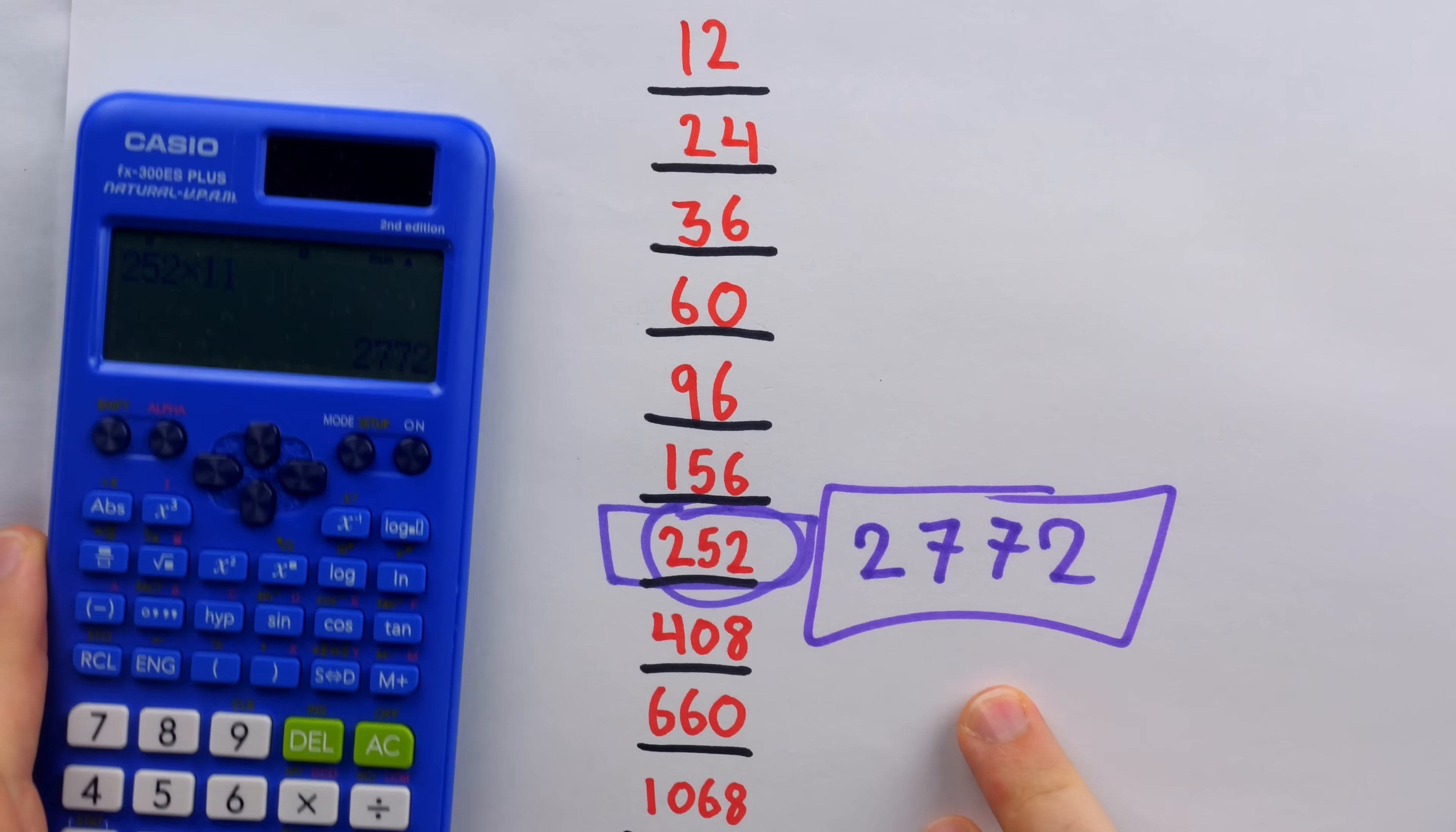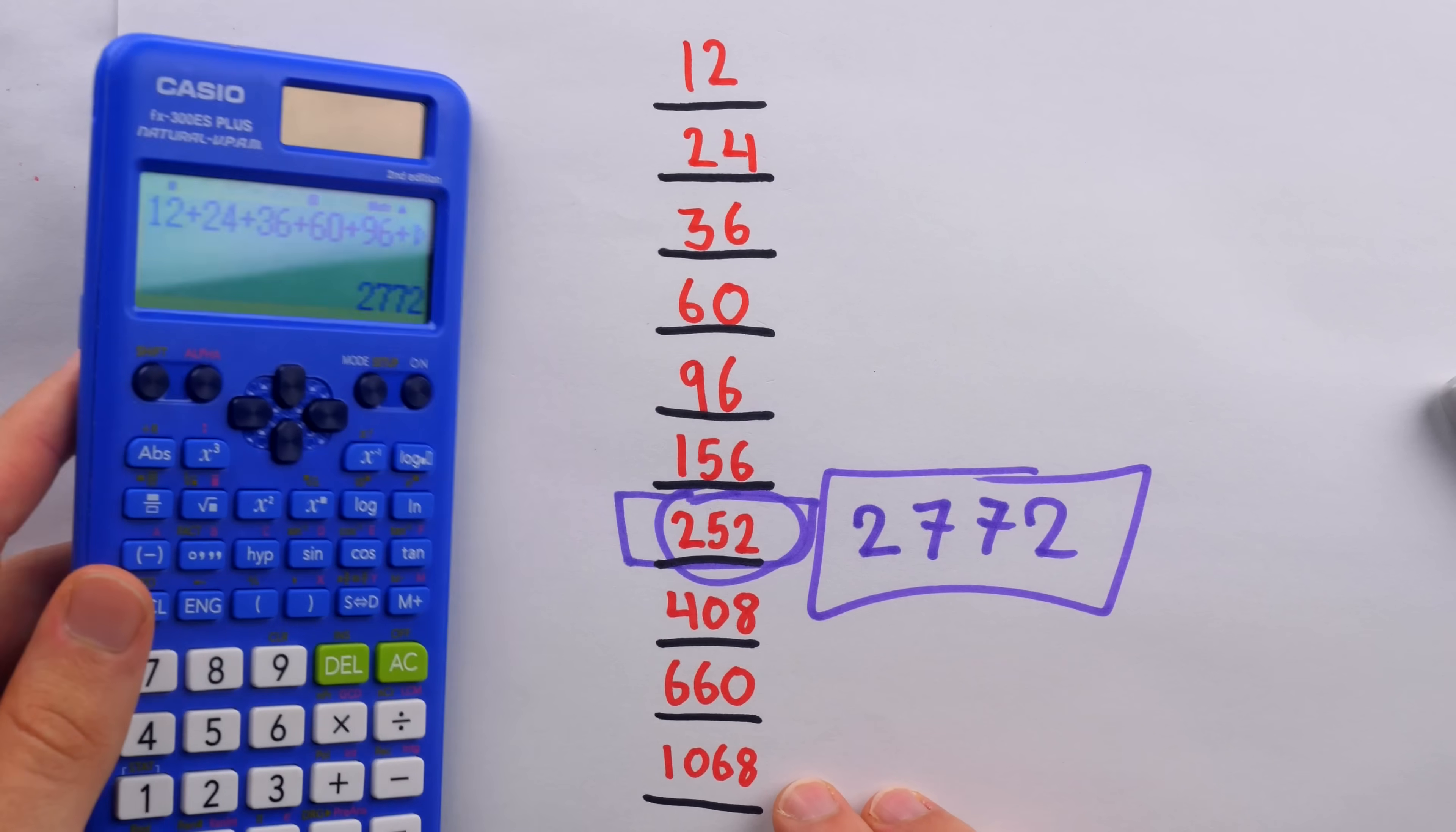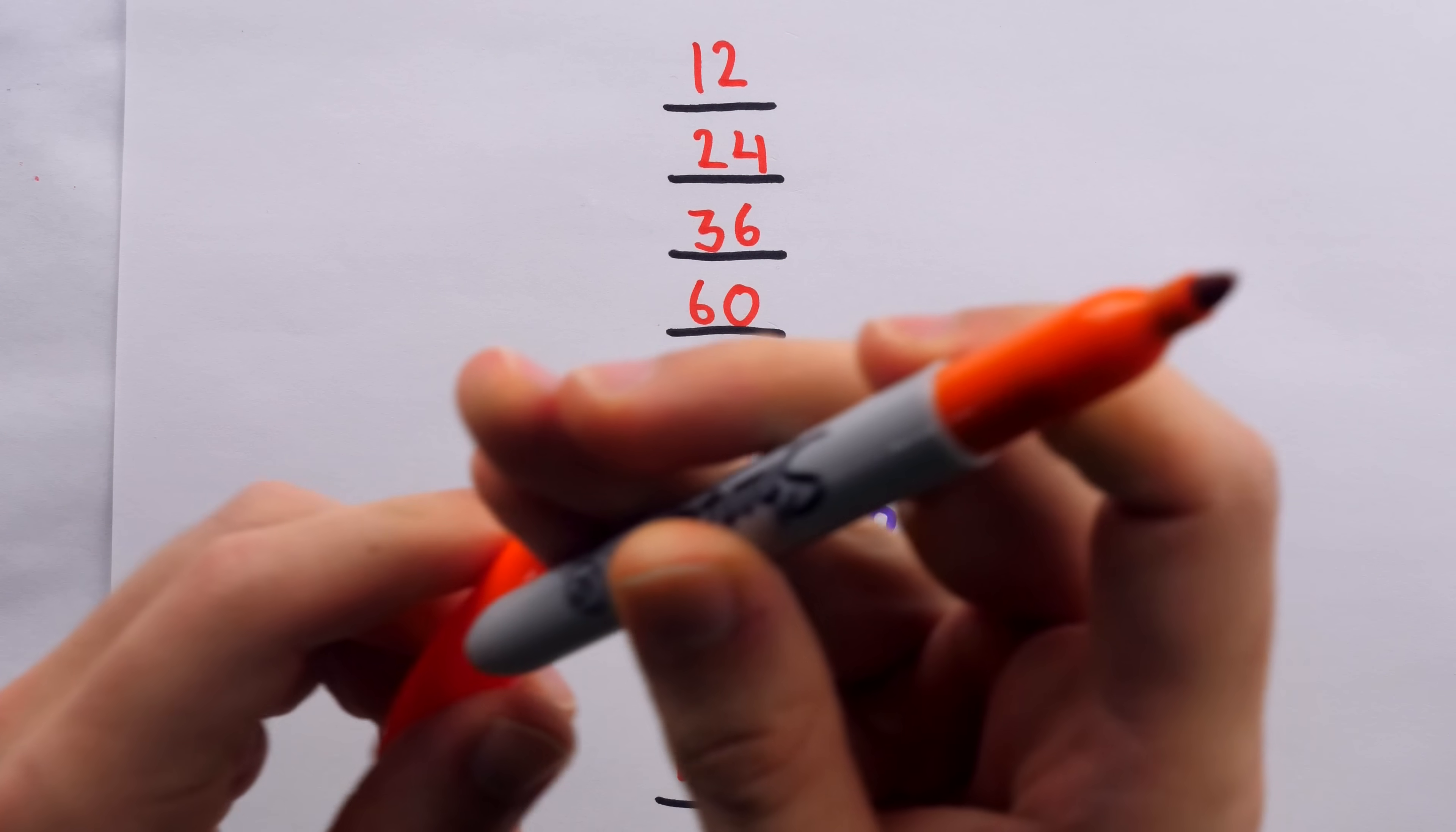Now, let's just add up all 10 numbers on the calculator and make sure that's actually correct. So there it is. 2,772. Just added up all 10 numbers in the calculator. I was able to do it in my head a whole lot faster. So yeah, it's a pretty incredible trick.